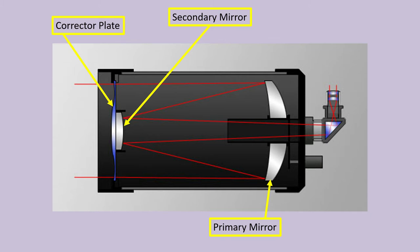Here is a cutaway view of a typical catadioptric telescope. In this video, we'll be using the terms corrector plate, secondary mirror, and primary mirror. This picture demonstrates what is meant when these terms are used. The red lines show the path that light travels inside the telescope. Note that in most catadioptric scopes, the primary mirror has a hole through its center. Also, different types of catadioptric scopes have different corrector plate shapes, but corrector plates are placed at the aperture end — the sky end — of the telescope in the most popular models.